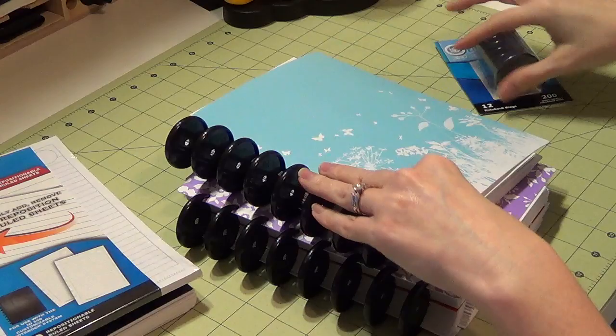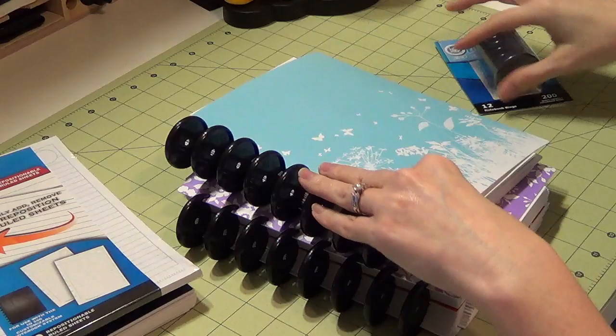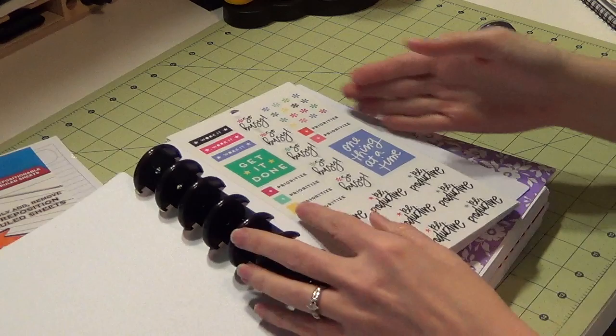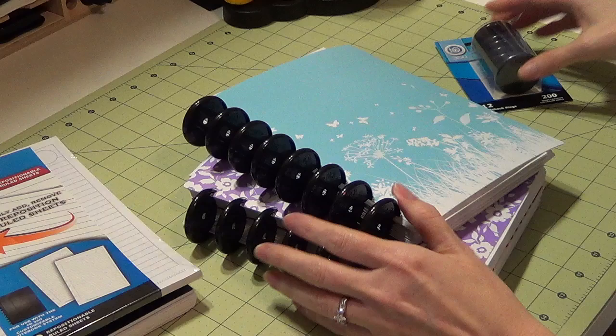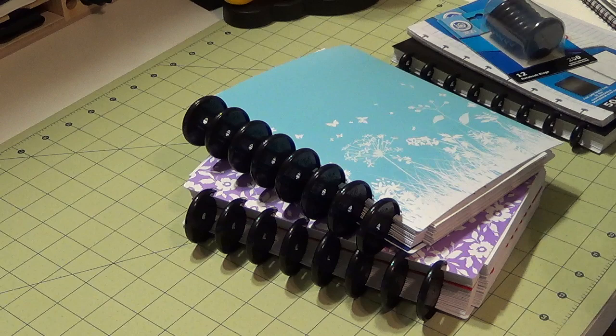And then after I glued it on I just trimmed the excess piece off so they would all just kind of line up. So there you have it. There's my little DIY planner sticker book for my Me and My Big Ideas Happy Planner stickers. If you guys have any questions or anything like that, just let me know and I will see you guys in my next video. Bye.